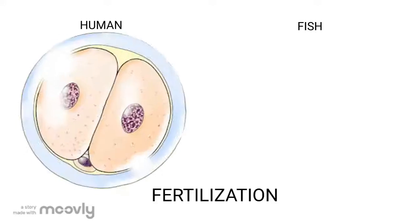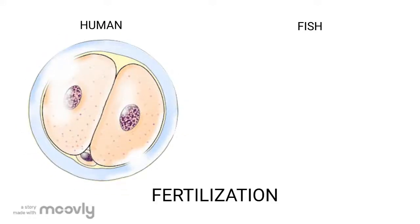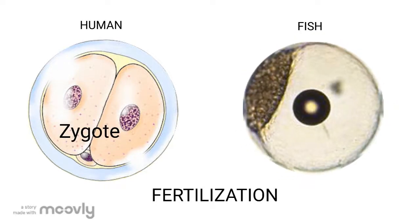Overall, human embryos and fish embryos go through very similar stages of early development. A human embryo develops after the sperm fertilizes the egg and becomes a zygote. A fish embryo develops through a set of fertilized eggs that are laid outside the female's body.